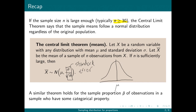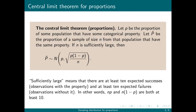We can conclude a similar theorem for the sample proportion — the proportion of people in a sample that have some property we're interested in. The central limit theorem for proportions says: let P be the proportion of some population that has some categorical property, and let P-hat be the proportion of a sample of size n from that population that have the same property. If n is sufficiently large, then P-hat is also normally distributed, centered at the true proportion P, with a standard error of the square root of P times (1 minus P) over n.